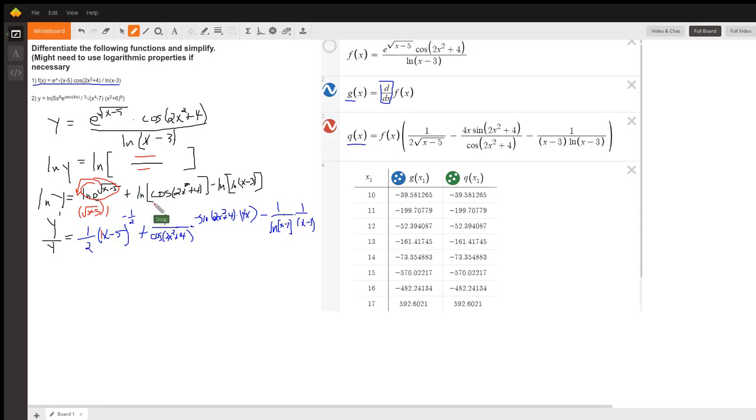The derivative of this term is 1 over the log of the anything, 1 over the anything, times the derivative of the inside. Well, the derivative of cosine is minus sine. And then I have to use the chain rule again. The derivative of 2x squared plus 4 is 4x.